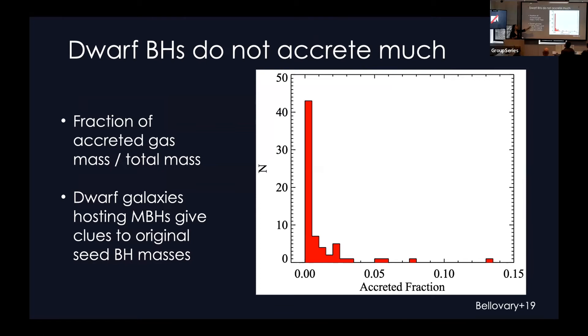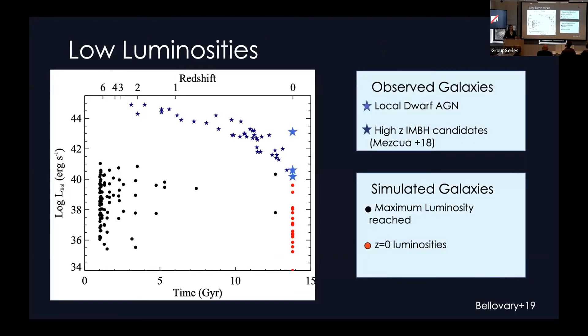Okay, so dwarf black holes, it turns out, accrete very little, at least in these zoom simulations. And so what this is a histogram of is the fraction of accreted mass or the total mass, or basically how much of the mass is made of gas versus how much is made of black hole seed and other black holes. So zero would be no gas, and one would be all gas. And you can see this giant peak at zero. So almost none of the black holes in these galaxies accrete very much gas at all. The highest is at about 13%, which is actually very interesting and important, because this can actually give us a limit as to the original black hole seed mass. If we know that black holes in dwarfs or wandering black holes in more massive galaxies don't accrete very much, we can know that if we can figure out how to measure their mass, that can give us a limit as to the formation mass or the seed mass in the early universe, if they have no history that has then been erased by accretion.